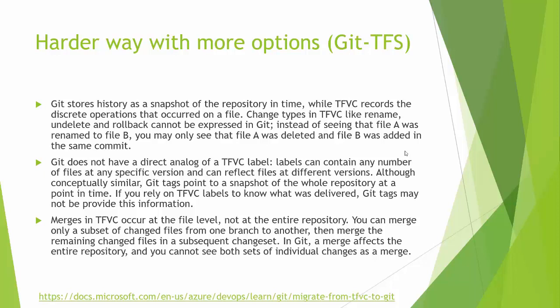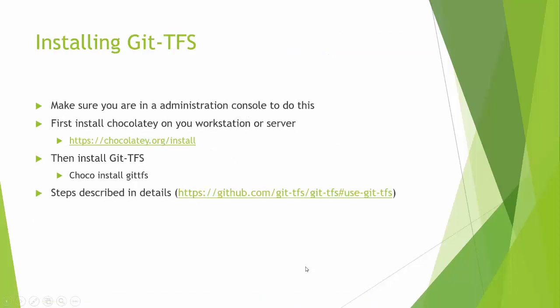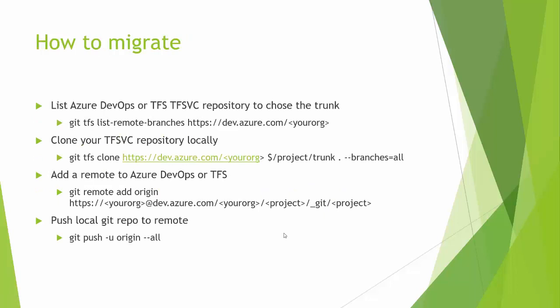So you have to be aware of those nuance differences between Git and TFVC when doing this migration. If you need more information, you can go read the URL listed here, and there's also a nice section on how to use Git TFS at the GitHub URL as well. In order to install Git TFS, we need an admin console. We install Chocolatey, which is basically a package management tool that can install any kind of third-party tools on our machine quite fast, keeping them updated. Then we can just do 'choco install git-tfs' and that'll set up everything properly and put it in our path.